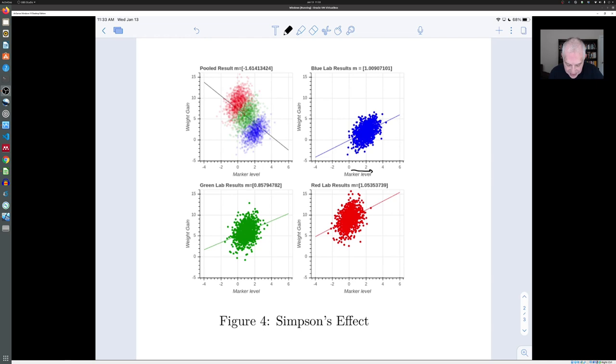Each lab does this experiment and they get very similar results. As you can see, yes, it's kind of a cloud of points, but when they do simple linear regression they get a very clear increasing line. The slopes aren't that different: blue lab gets a slope of 1, red lab gets a slope of very close to 1, green lab gets a slope of 0.85. After all, they're using different participants in the study and so they get slightly different results.